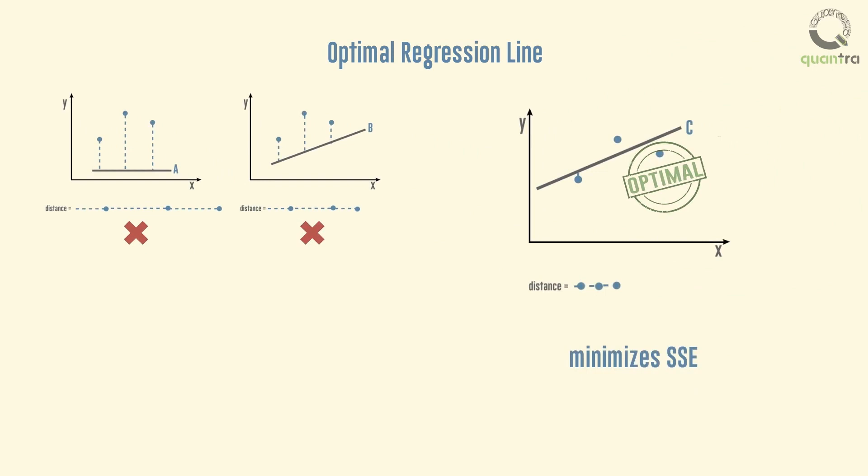This is the reason why simple linear regression is also called ordinary least squares, or OLS, and the estimated or predicted values by the regression equation, that is y predicted, are called least squares estimates.